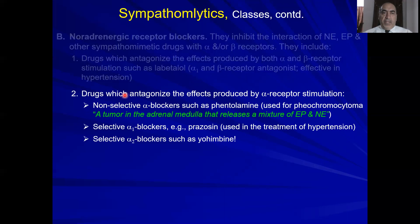Now talking about drugs that inhibit only alpha, not beta — these are further subdivided into non-selective alpha blockers, such as phentolamine and phenoxybenzamine. These drugs are used in a tumor of the adrenal medulla called pheochromocytoma, which produces a significant increased amount of catecholamines — norepinephrine and epinephrine — associated with severe hypertension. Selective alpha-1 blockers such as prazosin, doxazosin, and the usine-family drugs are used in treatment of hypertension, and selective alpha-2 blockers such as yohimbine also exist.